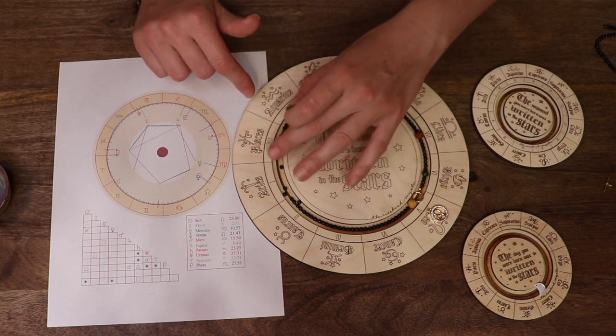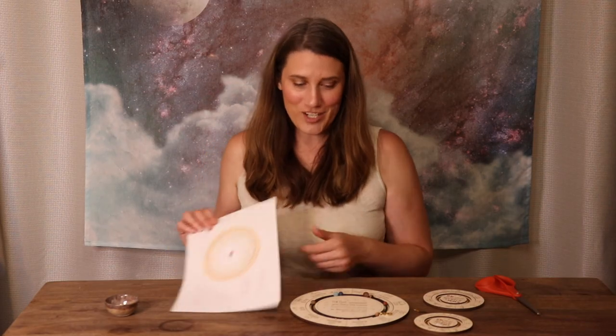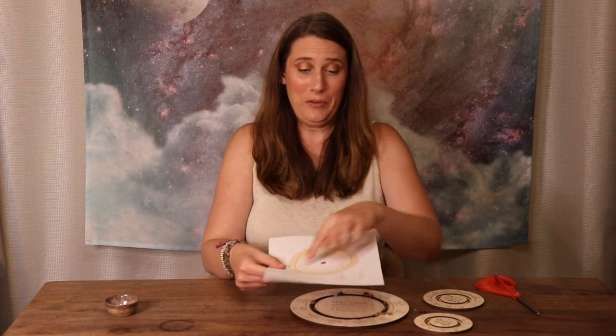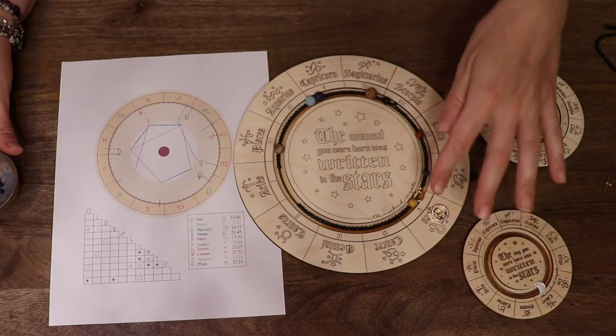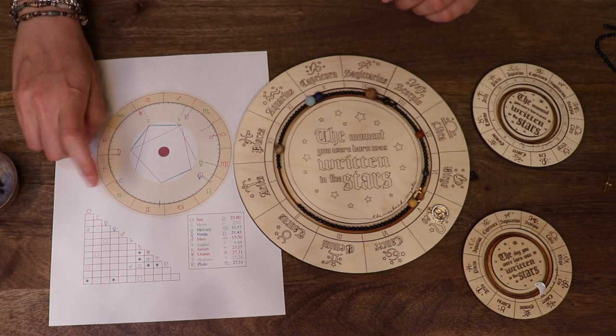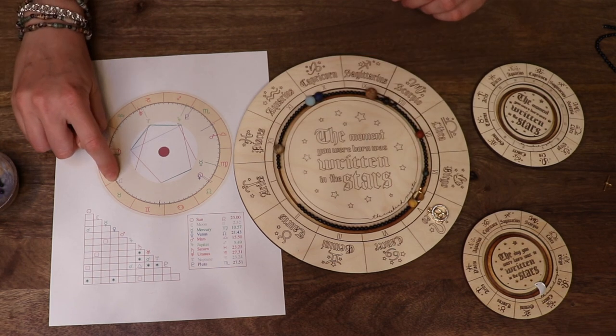And if you are feeling really nervous about getting these in the right spot, the Cafe Astrology chart prints out so that you can cut out this circle, line it up in the middle of this and just lay it down. It's really easy. I might take a shot and show you afterwards.